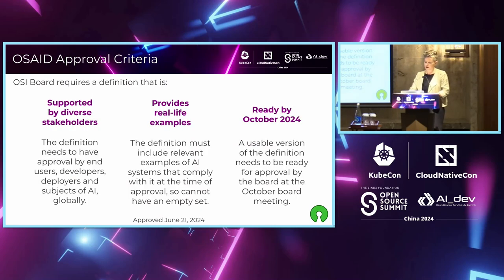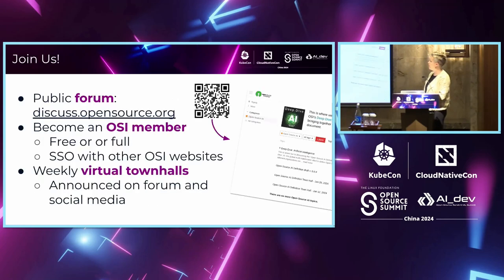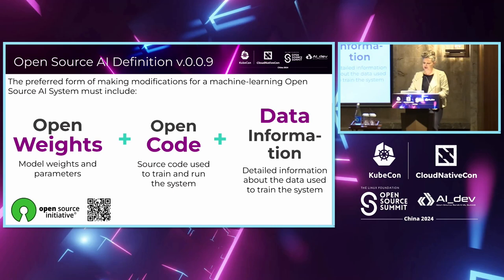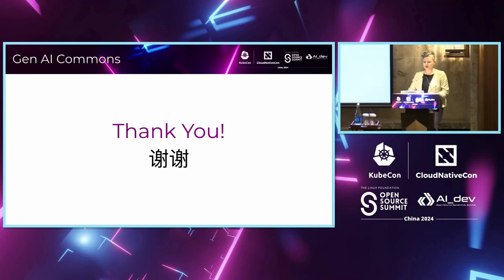These are some constraints on the final definition, which we'll release at the end of October: it can't be an empty set, and it must be supported by diverse stakeholders. We invite you to comment and join the conversation — the QR code will take you to the forum. You can become an OSI member, though you don't have to — it's free to talk. We have virtual town hall meetings every two weeks; the next one is actually tonight at 11 p.m. Thank you, and we will do Q&A.